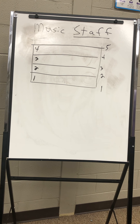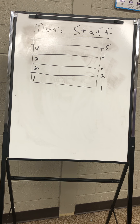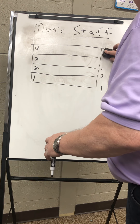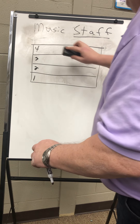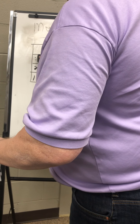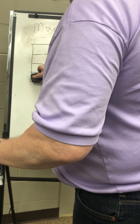So remember: we count our lines from the bottom and there are five lines. We count our spaces from the bottom and there are four spaces. In just a second we're going to go over the letter names of these lines, particularly in treble clef. Let me erase this and then we'll get to our treble clef.